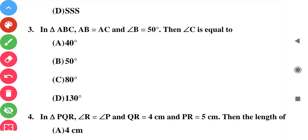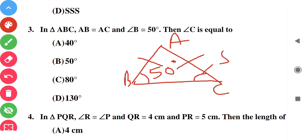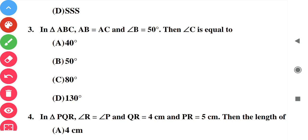Question number three: in triangle ABC, AB is equal to AC. When two sides are equal, the opposite angles are also equal. So the angle opposite to the equal sides is also 50 degrees. The correct answer is 50 degrees.